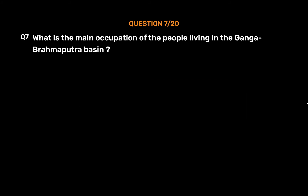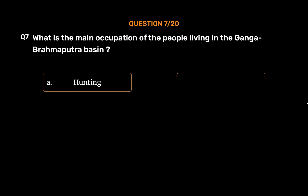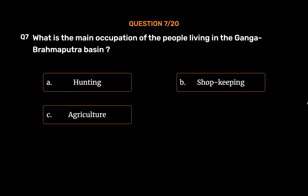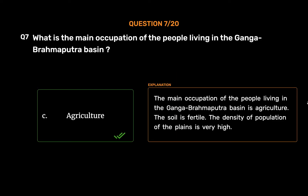Question number 7. What is the main occupation of the people living in the Ganga Brahmaputra basin? Option A: Hunting. Option B: Shopkeeping. Option C: Agriculture. Option D: None of these. The correct answer is Option C, Agriculture. The main occupation of the people living in the Ganga Brahmaputra basin is agriculture. The soil is fertile and the density of population of the plains is very high.